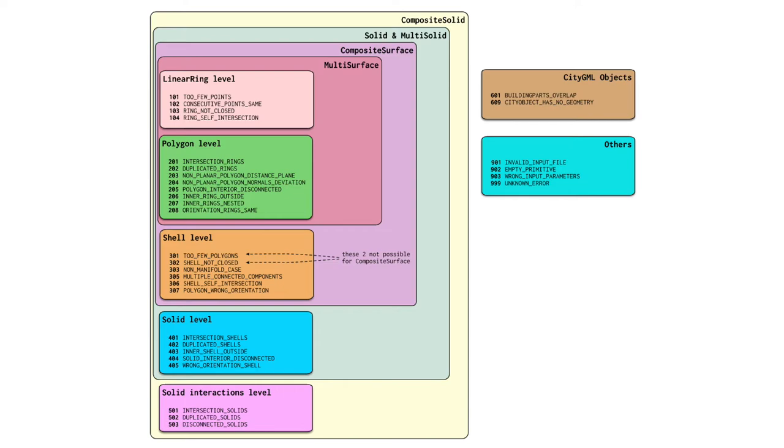So if we have, for example, a solid that has one hole in it, then the Val3dity would return that it's invalid, and it would give you an error 302, which is shell not closed, so there's a hole. And it would also go one step further and would give you the location XYZ of the middle location of that hole.